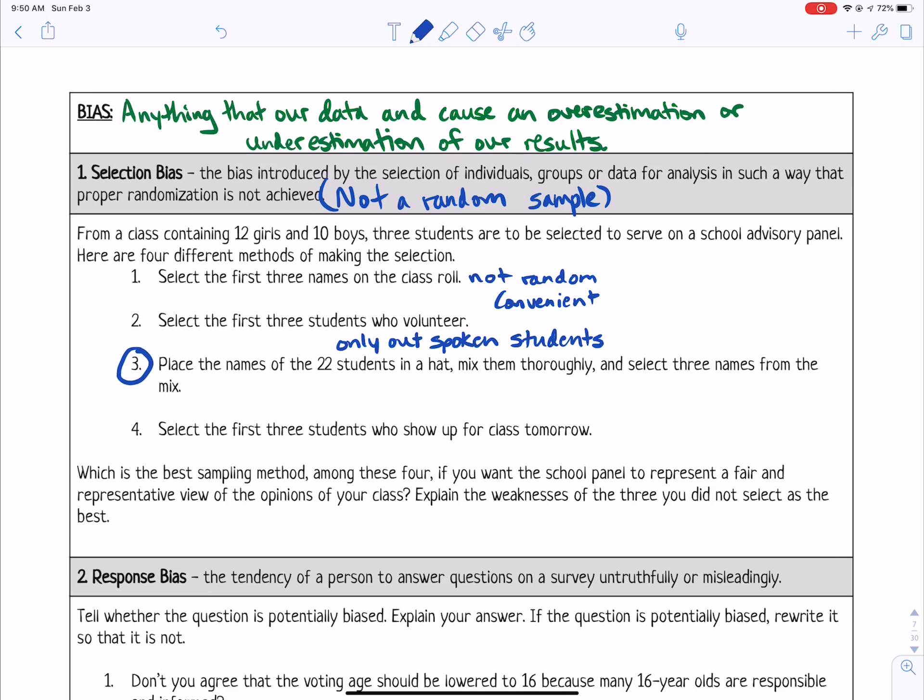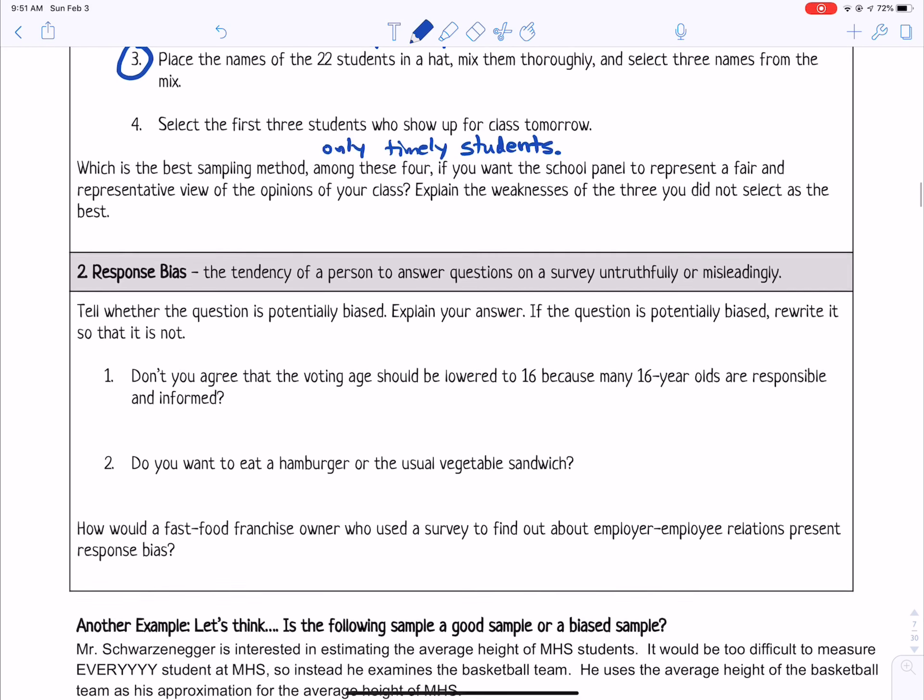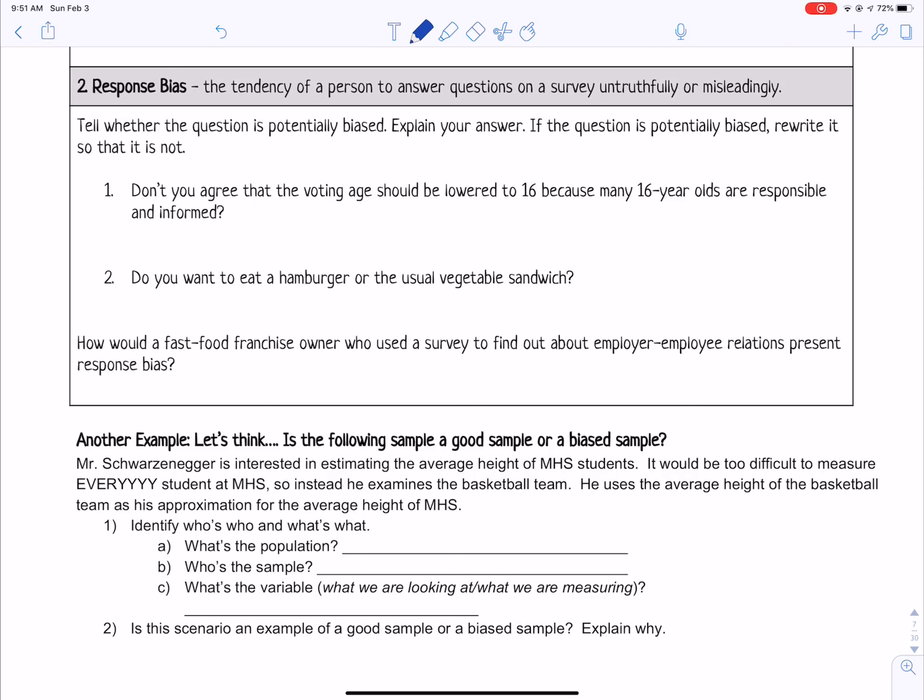And then number four, the first three students who show up for class tomorrow, those are only the timely students. So you haven't chosen anyone that might be late to class. Each student needs a fair chance of being chosen. So you've only chosen that type of student that would be on time to class. Alright, so number three was definitely the best method, and I think you can hear that when it's read.